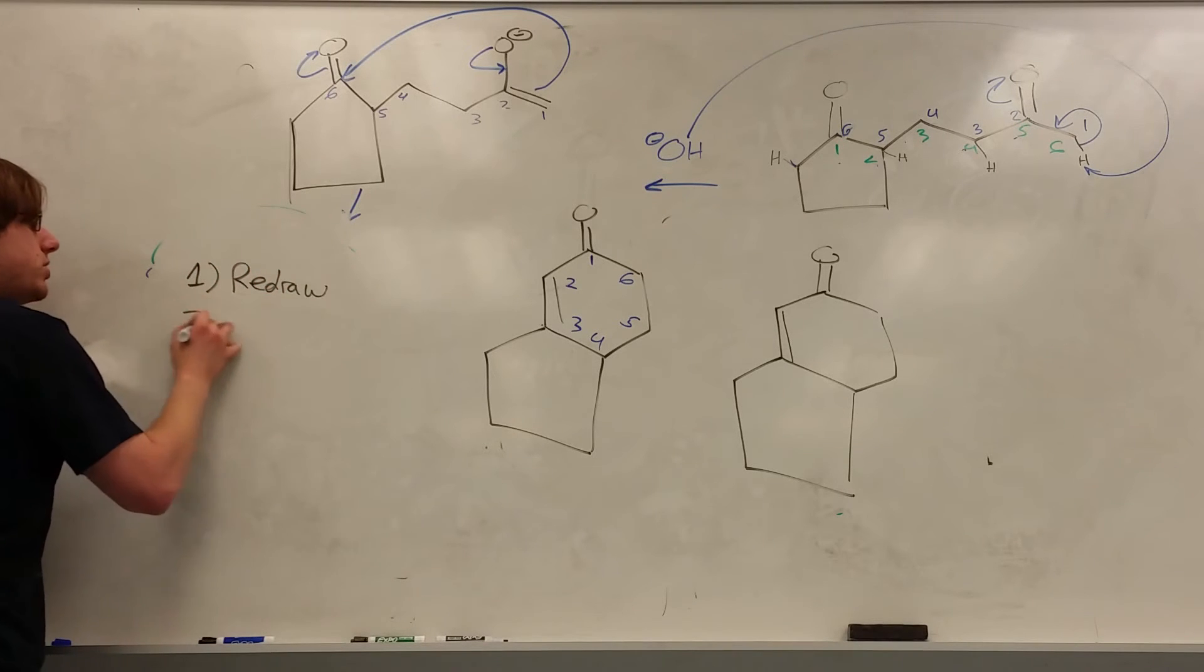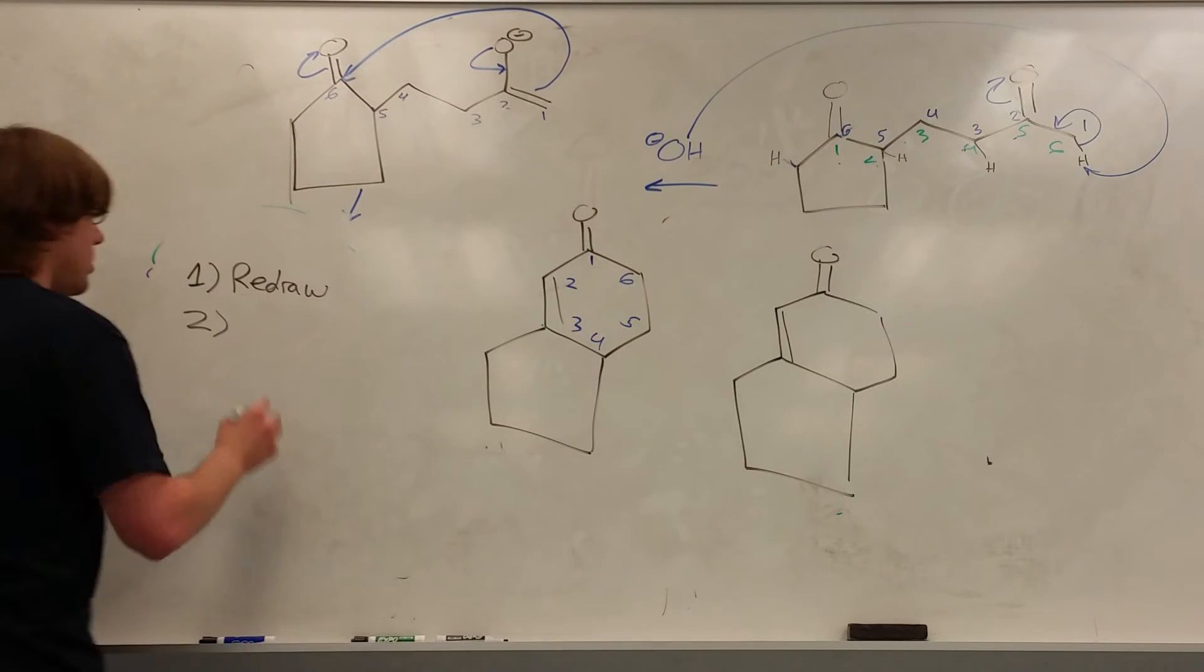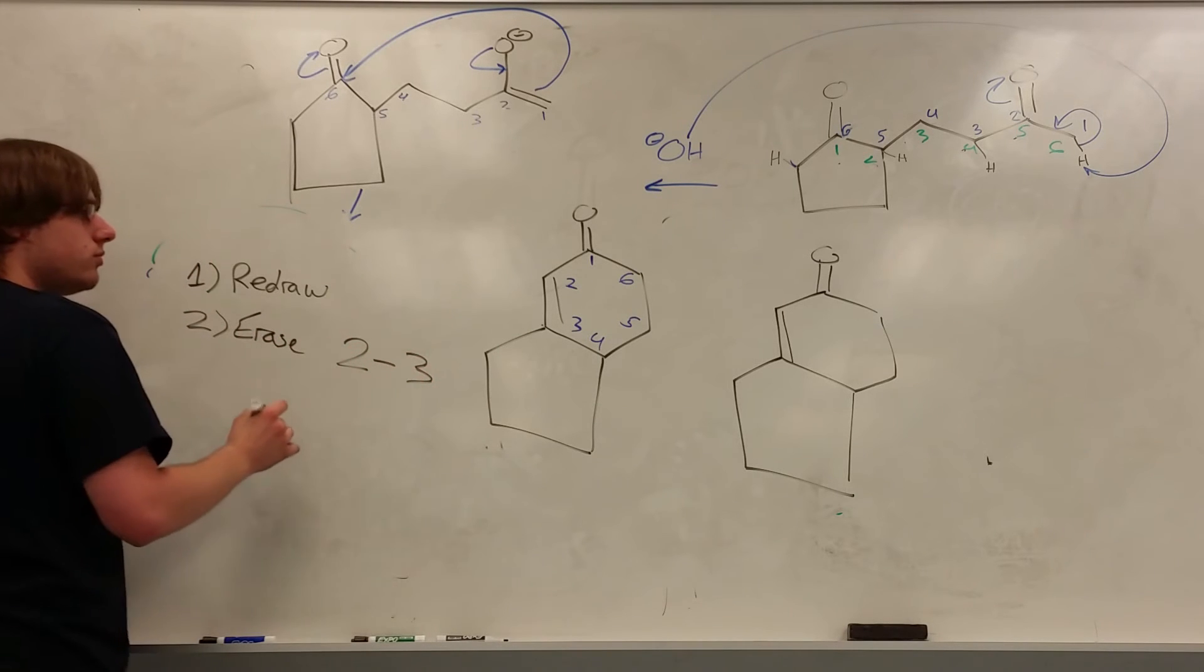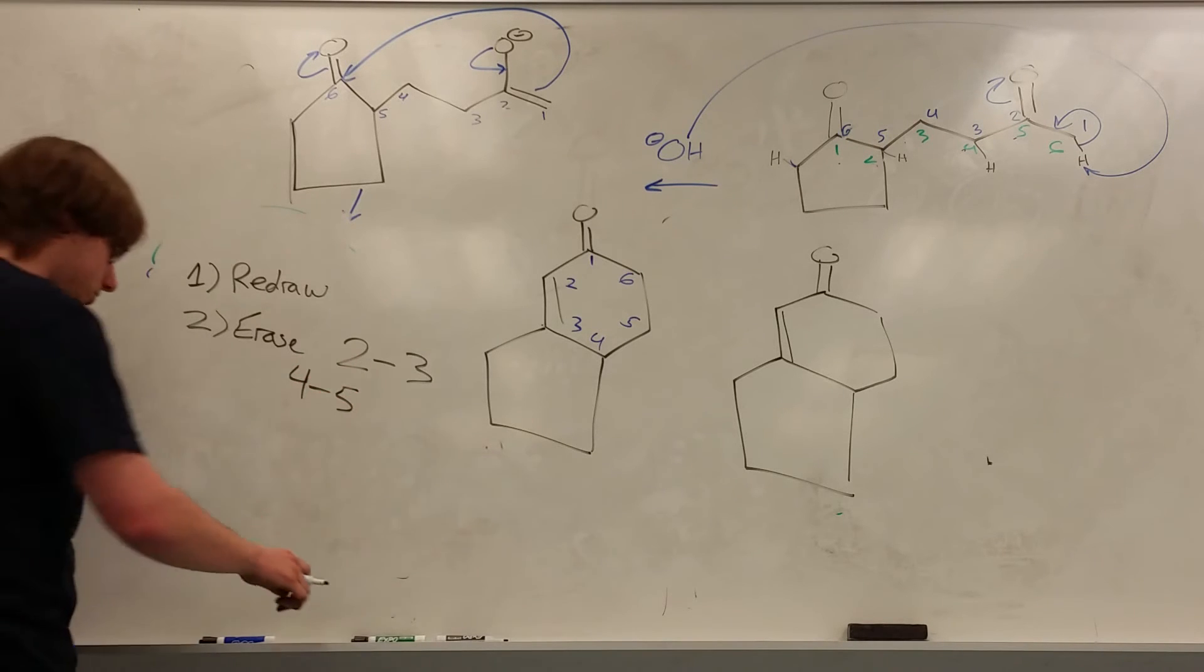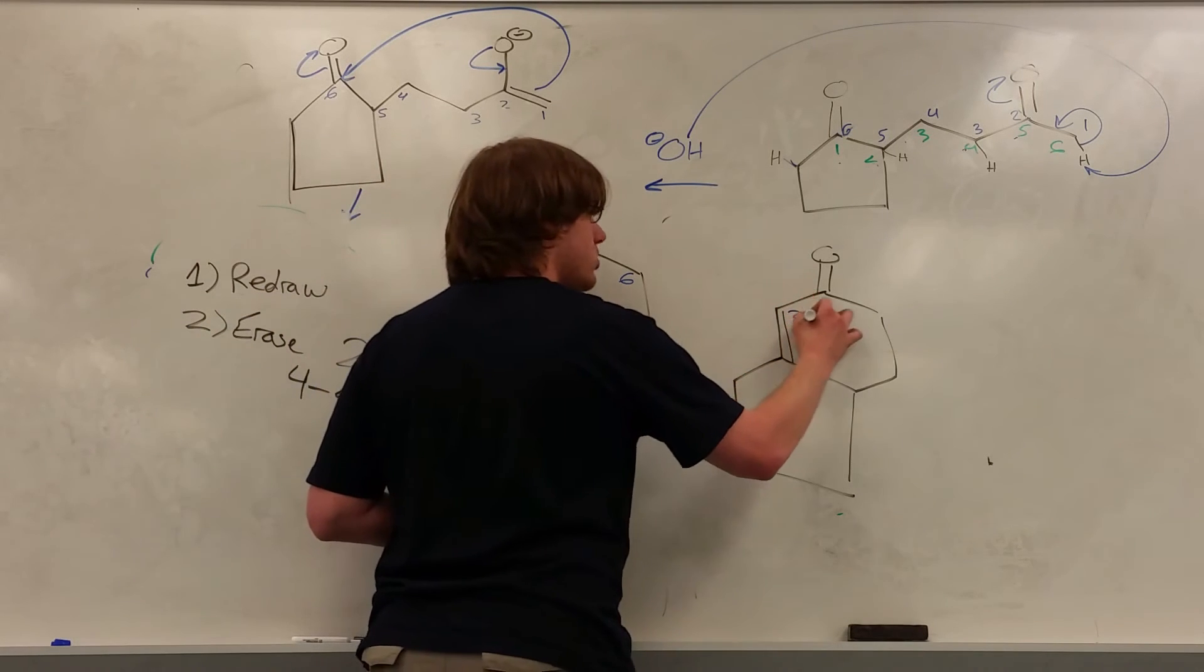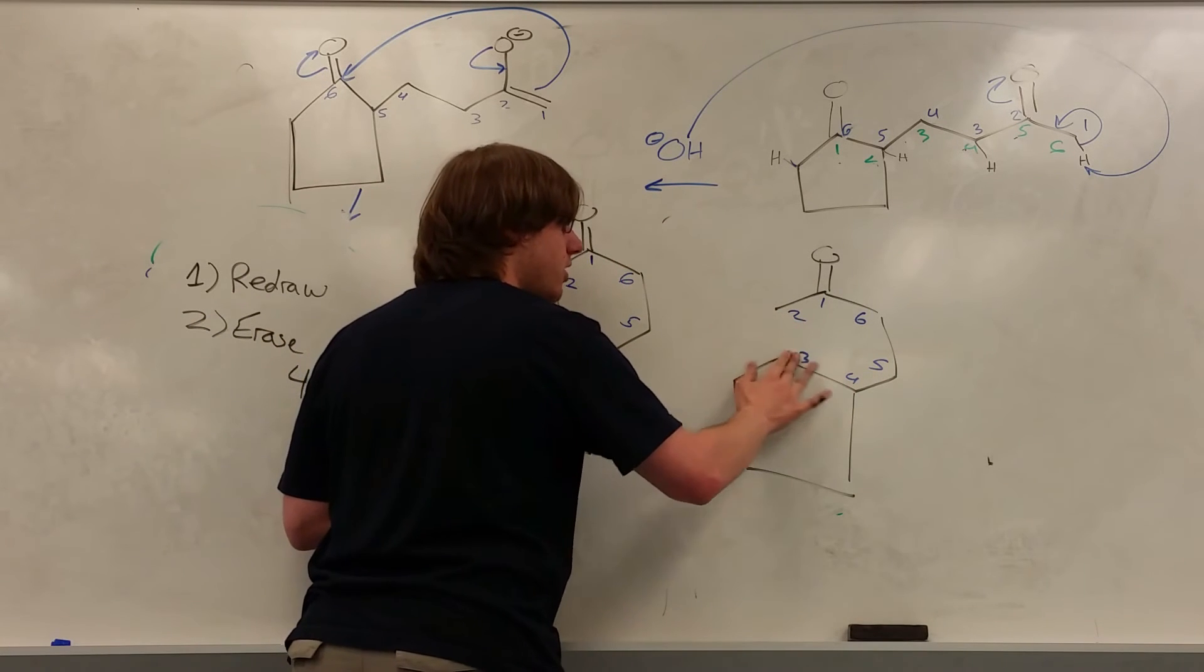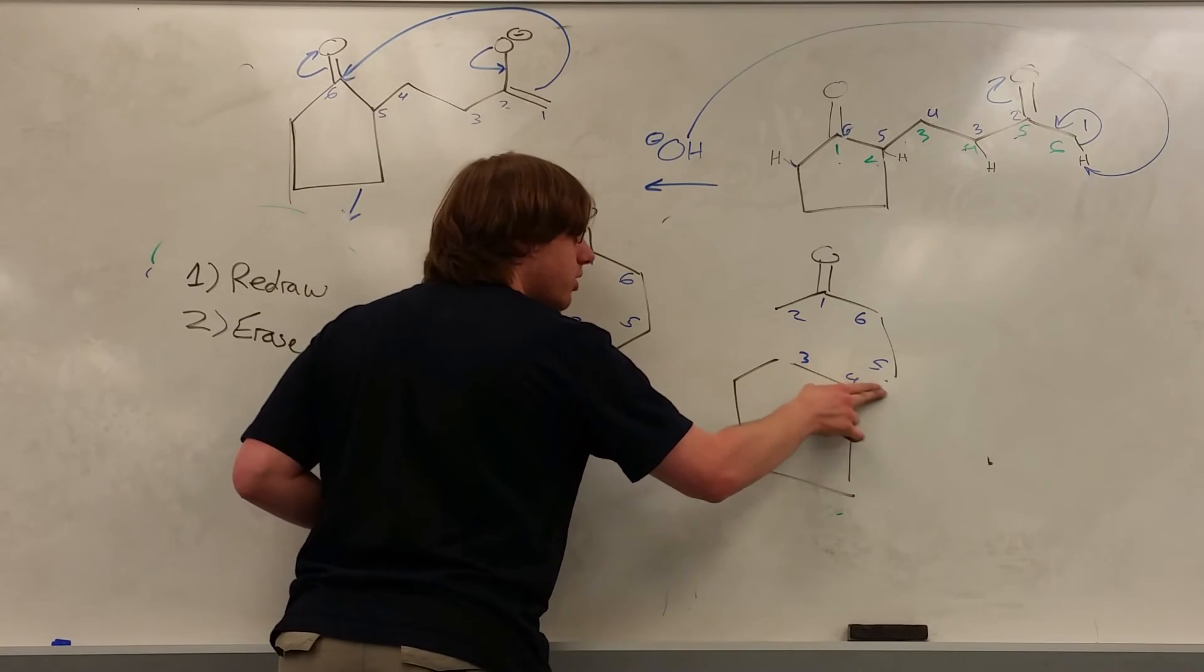Step two, erase the bonds between two, one, six, five, four, three. So I'm going to erase this double bond here. I'm erasing all the bonds between two and three and then I'm erasing all the bonds between four and five.